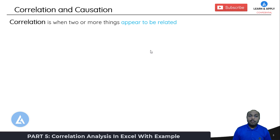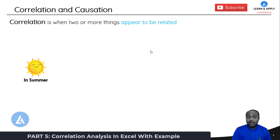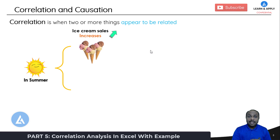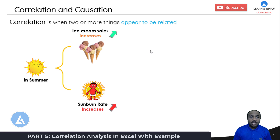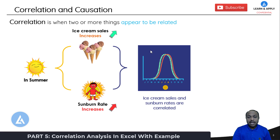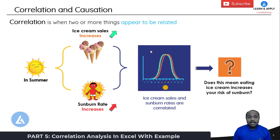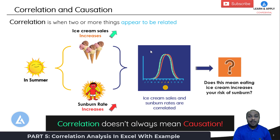Correlation is when two or more things appear to be related, but that doesn't mean one causes the other. For example, in summer we can see there is an increase in ice cream sales, but at the same time we can also see there is an increase in sunburn rates. If we conduct correlation analysis between ice cream sales and sunburn rates, we can see they are correlated. But can we say that ice cream sales increase your risk of sunburn? Of course not. Both ice cream sales and sunburn rates depend on the temperature of the day. Correlation doesn't always mean causation.